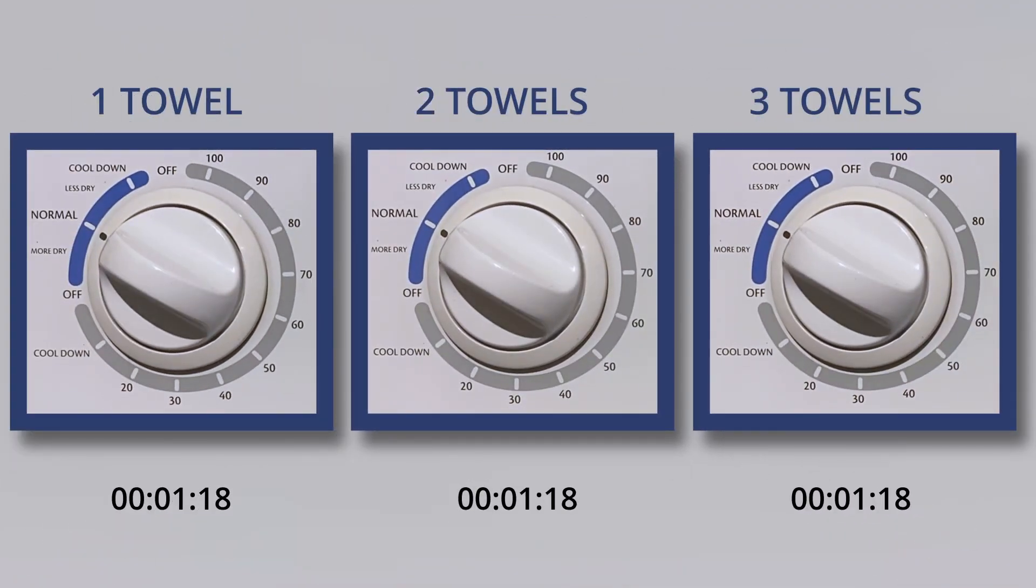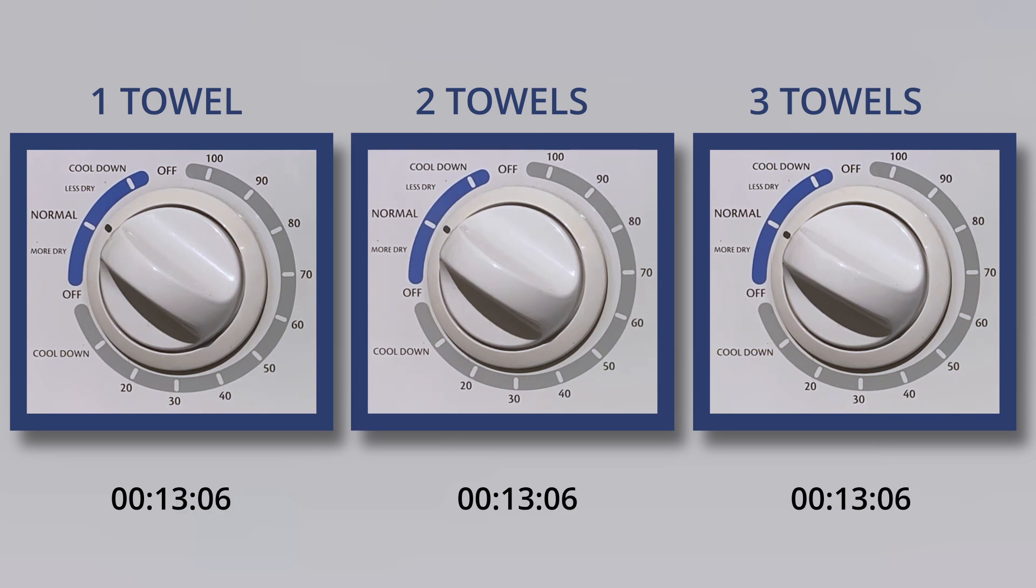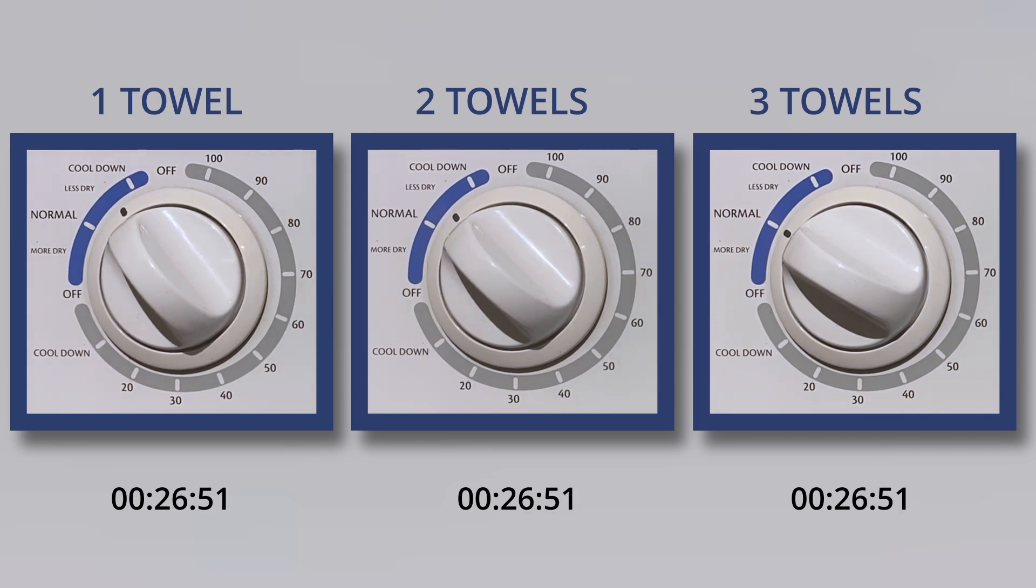They all begin at the same starting point, but we can see the load with one towel immediately heats up and begins to advance the knob. The load with two towels follows shortly behind, while the load with three towels struggles to reach its upper temperature limit due to the higher moisture content resisting the temperature change and begins to advance its knob last.